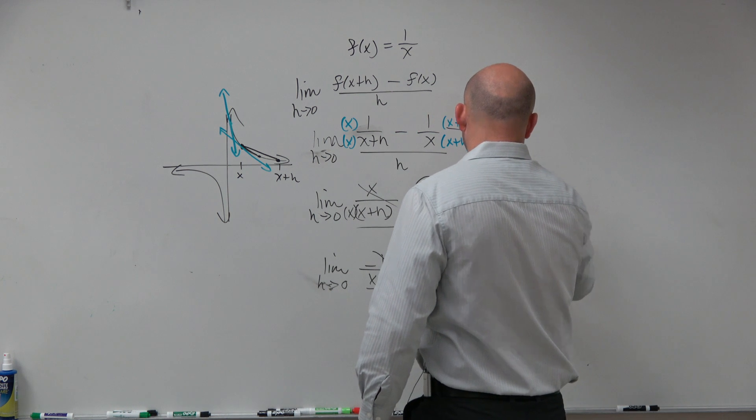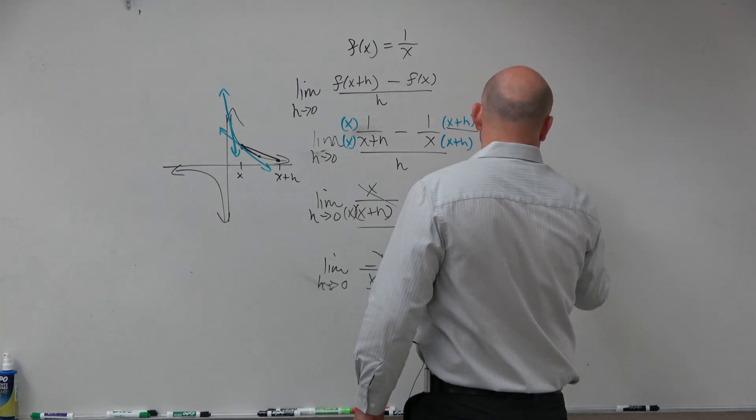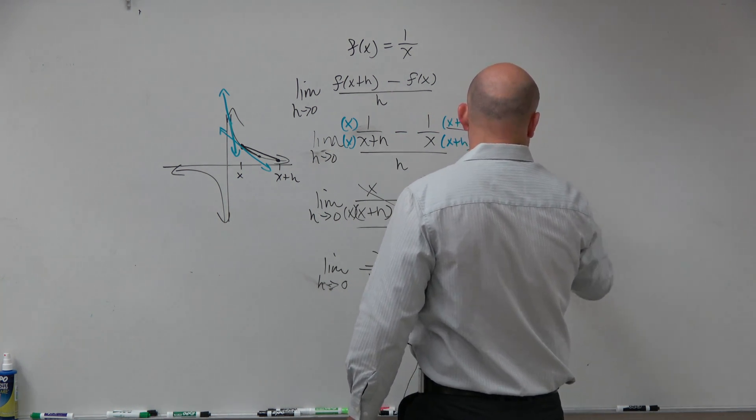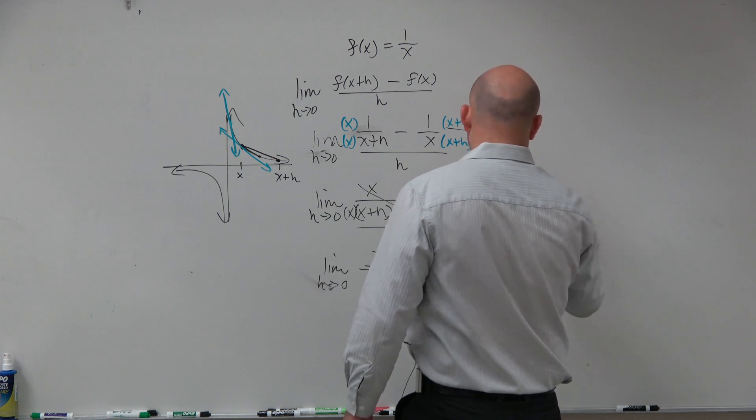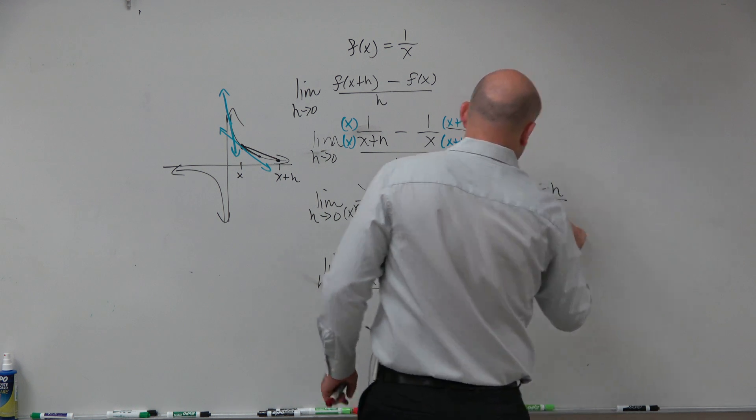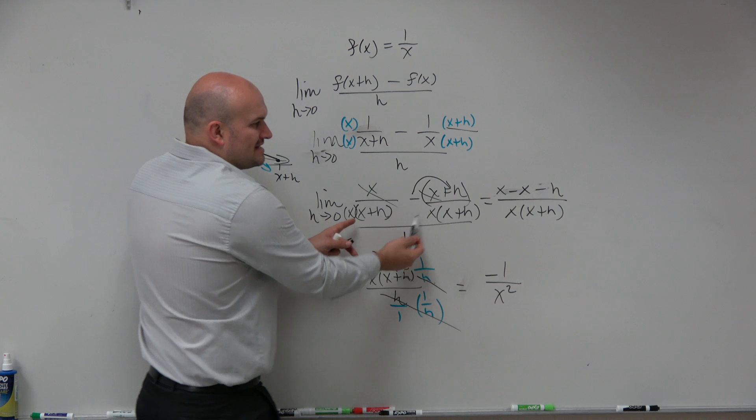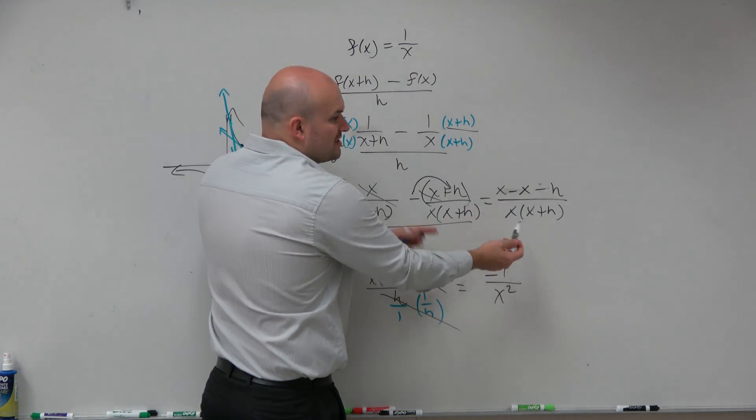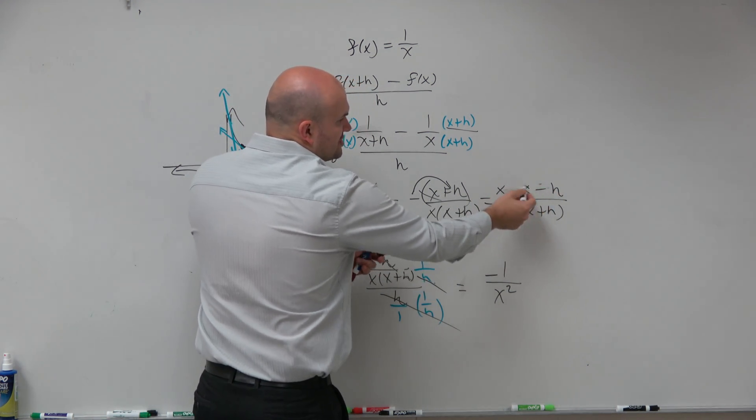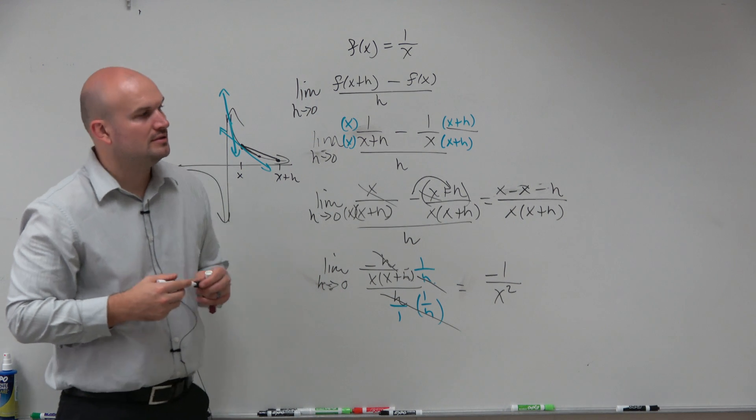I did that on purpose so they had common denominators. The other way to write this out would be x minus x plus h, minus h, all over x times x plus h. I did that so they had common denominators so I could combine them. So I did that on purpose. Now you can see that those subtract out and you get negative h. Okay?